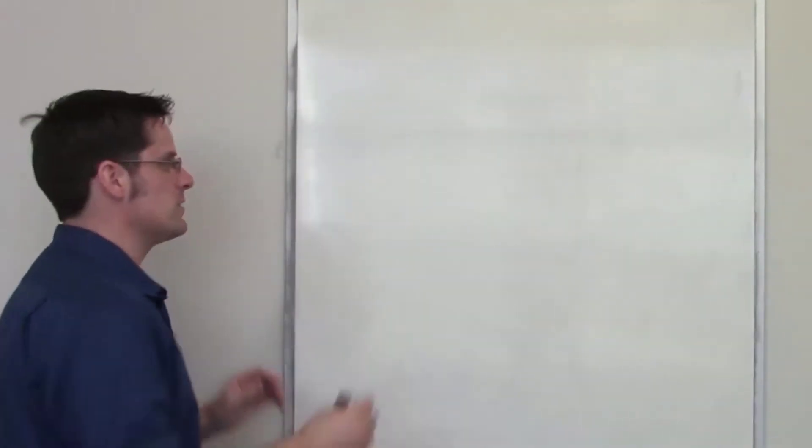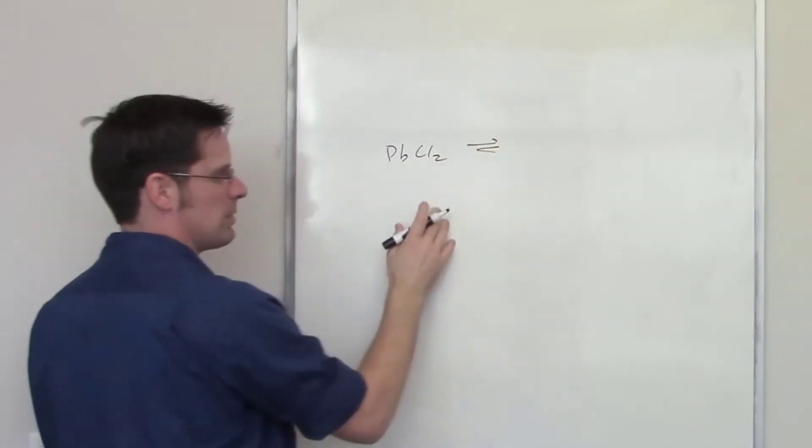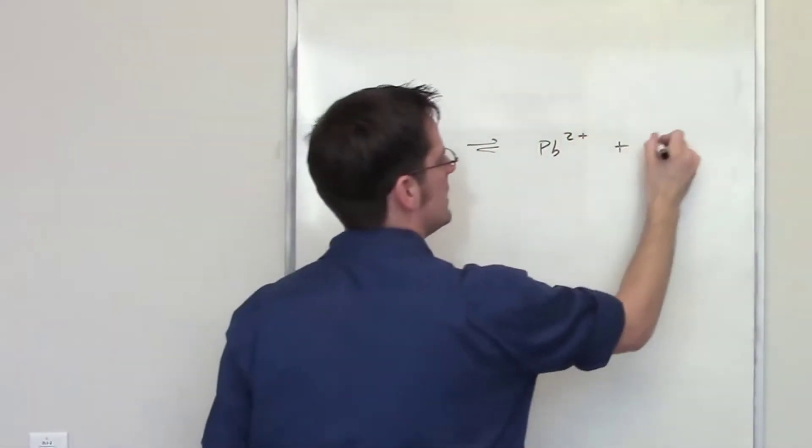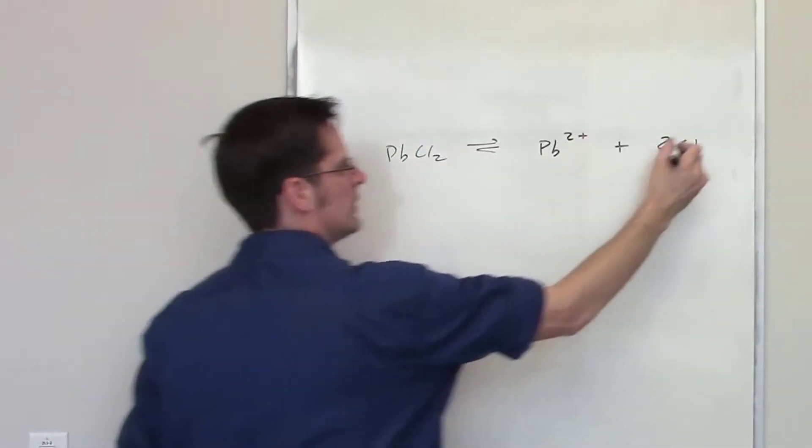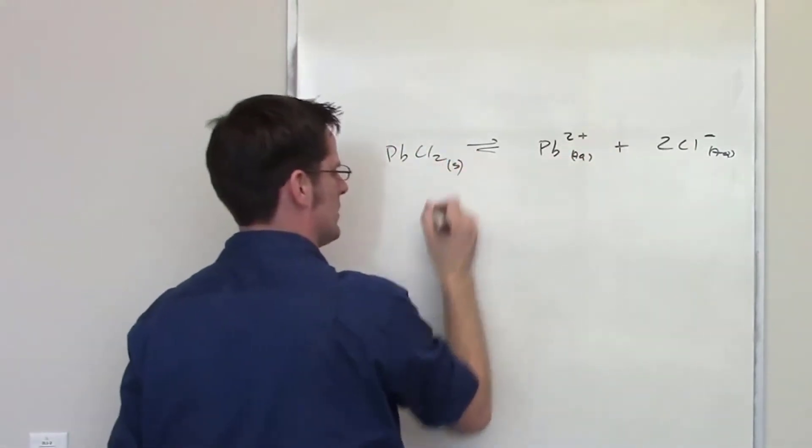This question is talking about lead-2 chloride. So I've got lead-2 chloride dissociating in an equilibrium setting to give off a bunch of lead 2+, and two molar equivalents of chloride minus. These are aqueous and the starting material over here is solid.